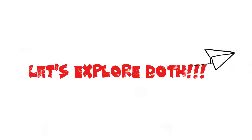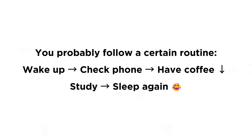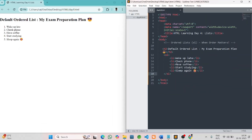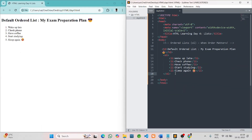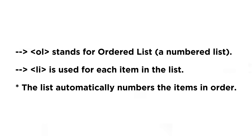Let's explore both. Coming to the first point: ordered lists, the `ol` tag. When order matters, think about preparing for an exam — you probably follow a certain routine: wake up, check phone, have coffee, study, sleep again. For things that need to follow a specific sequence, we use an ordered list in HTML. `ol` stands for ordered list, a numbered list. `li` is used for each item in the list, and the list automatically numbers the items in order.